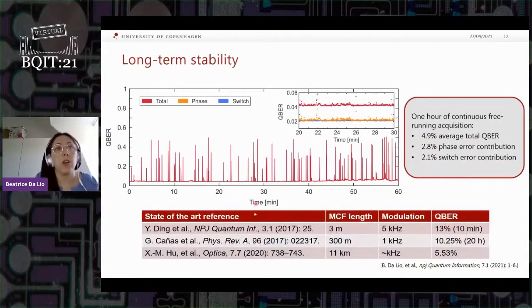If we compare our results to state of the art, we can see that in previous results they tried to stabilize much shorter multicore fibers achieving higher quantum bit error rates. And then this paper is actually very interesting that was published when we were almost finished measuring our results. They have a longer multicore fiber, similar results as ours, but still the modulation rate is much slower.